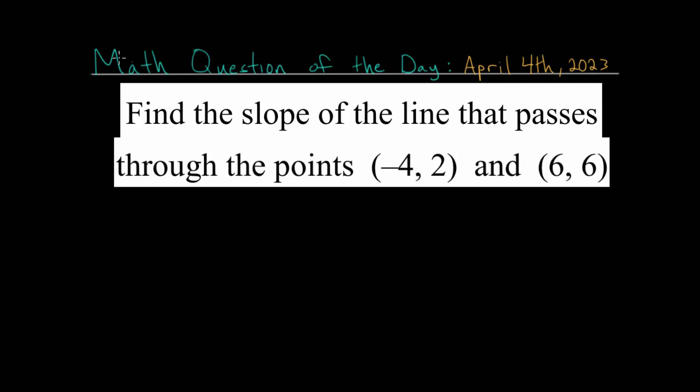In this video, I'd like to talk about the math question of the day for April 4th, 2023. And with this problem, we need to find the slope of the line that passes through the points minus 4 comma 2 and 6 comma 6.